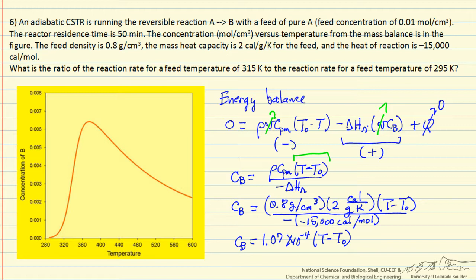Now I've substituted in the values with the units to check that units are consistent, and I end up with the equation with just a linear relationship between the product concentration and the temperature. This is of course what we expect for an adiabatic reactor.